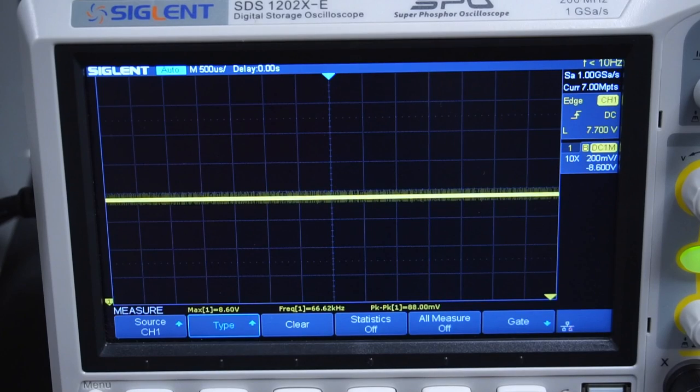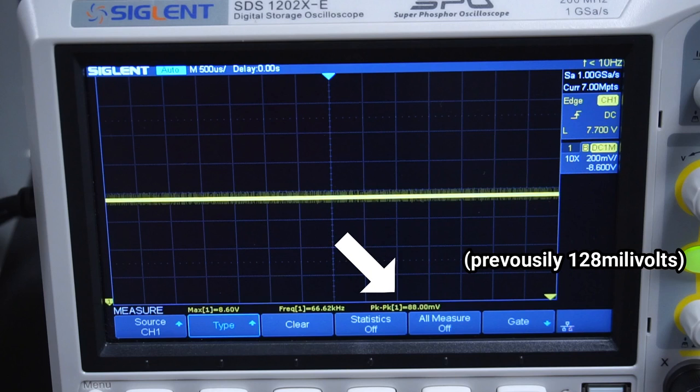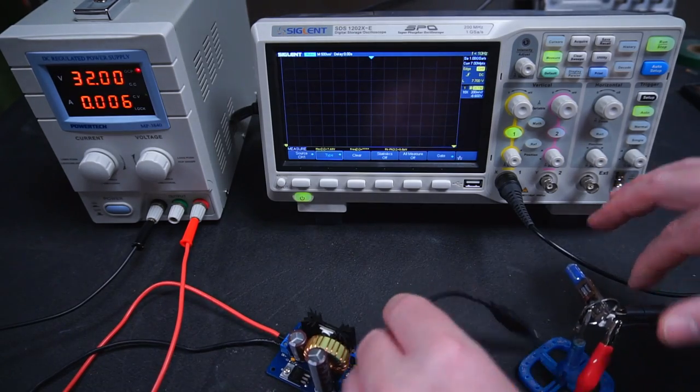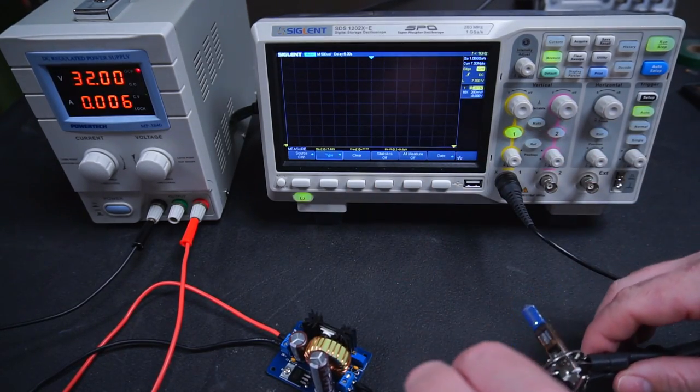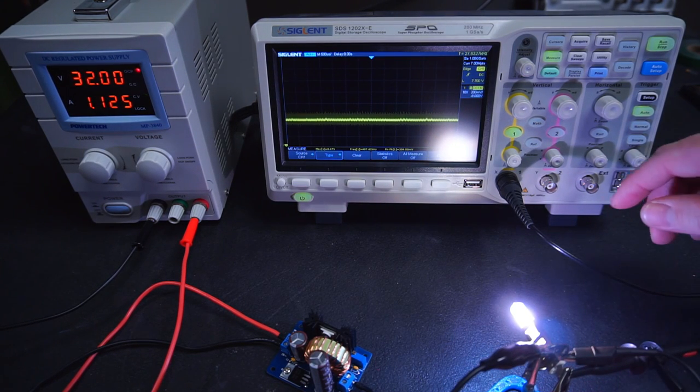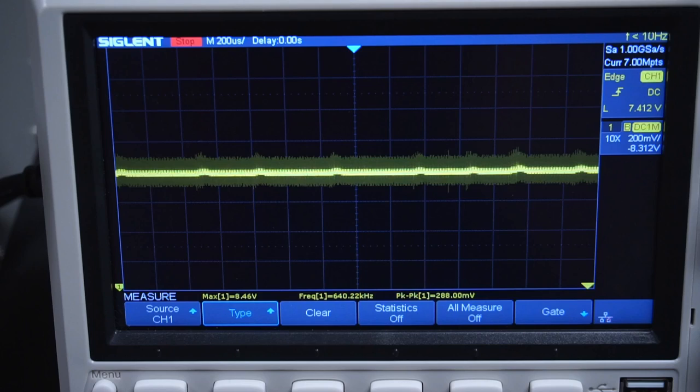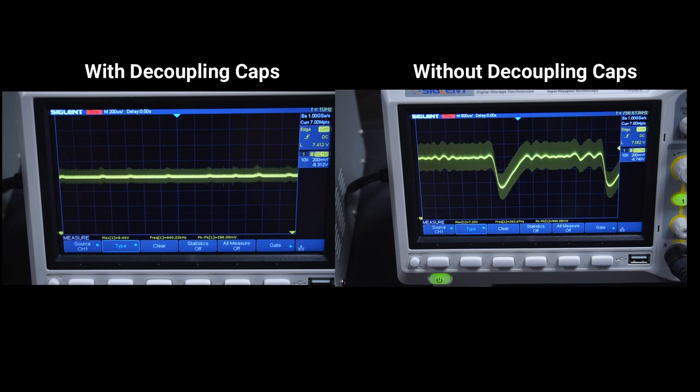Well that's looking much better than before. This time the noise is reduced to 88mV compared to before at 128mV. However we all know the real test is under load. So I'll reconnect the bulb to the buck converter just like last time. With the additional decoupling capacitors the noise is reduced to 288mV compared to before at 944mV. But more importantly the voltage is stable and doesn't have these wild dips like before.